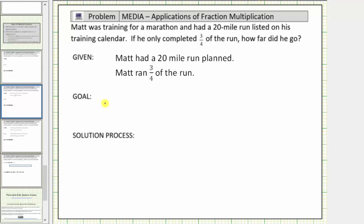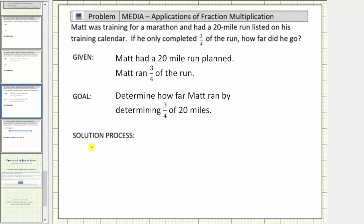The next step is to state the goal. The goal is to determine how far Matt ran by determining three-fourths of 20 miles. Now for the solution process, we want to determine what is three-fourths of 20 miles.